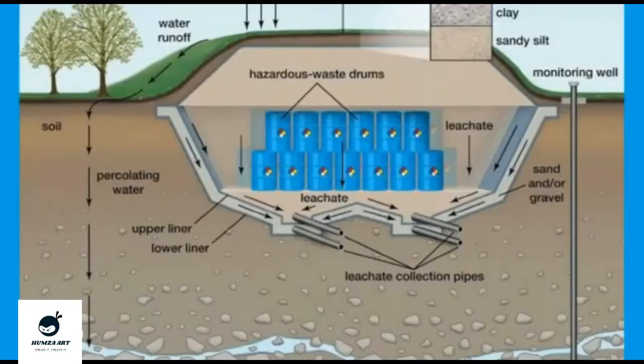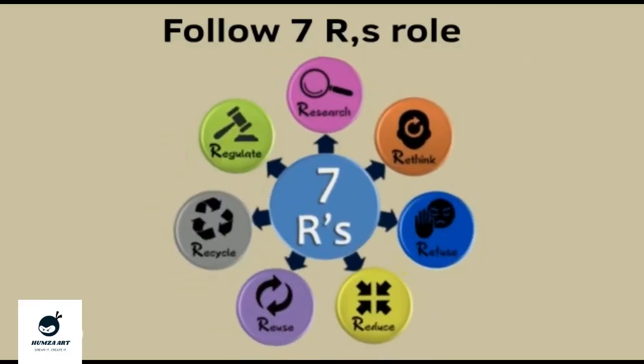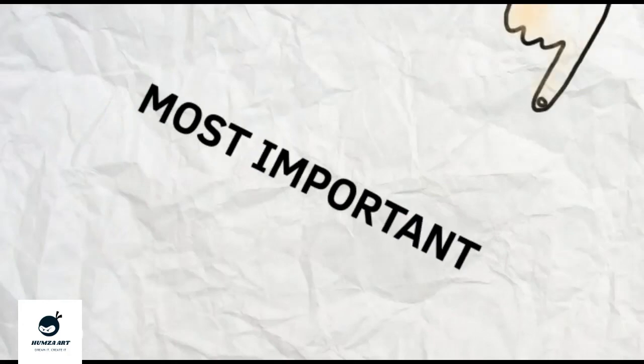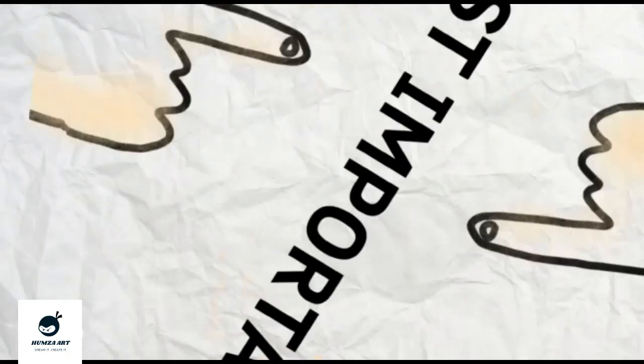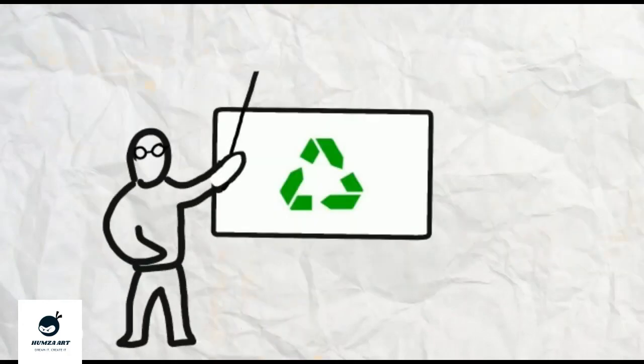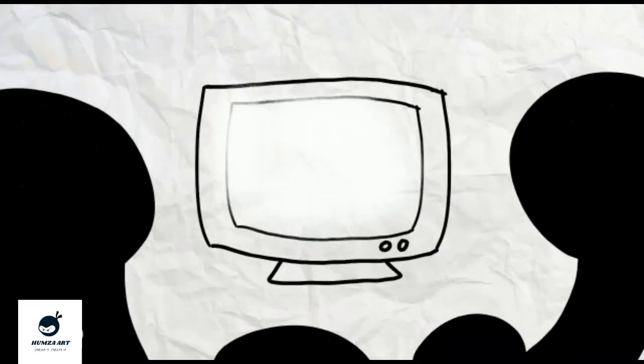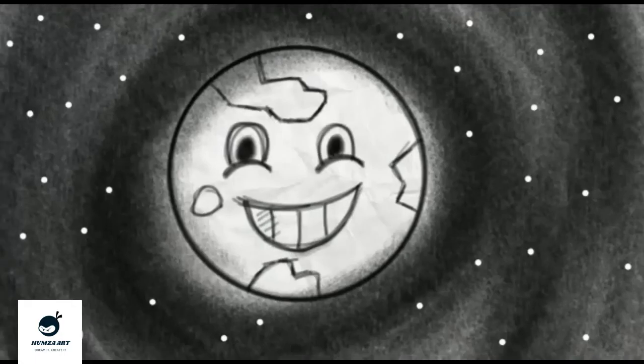We should follow the 7 R's rule. Most important is that all of this is possible when people are aware and educated about pollution. Then our earth will shine and smile.